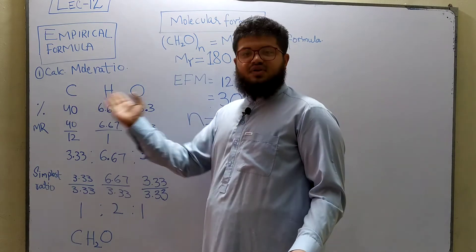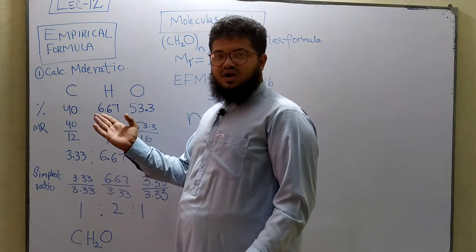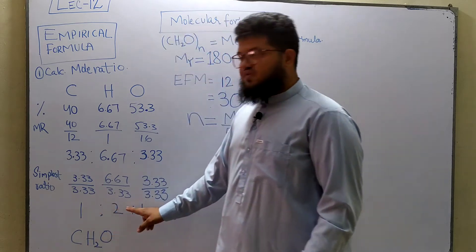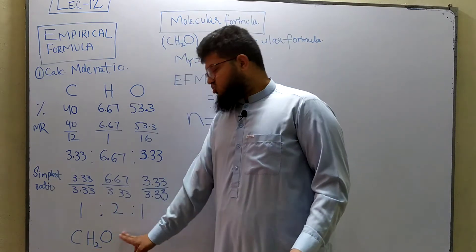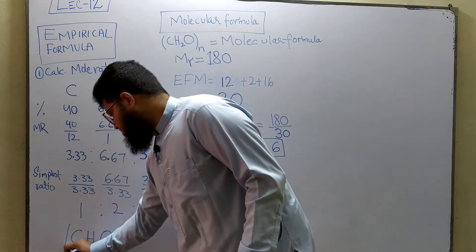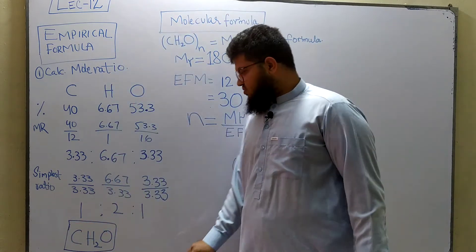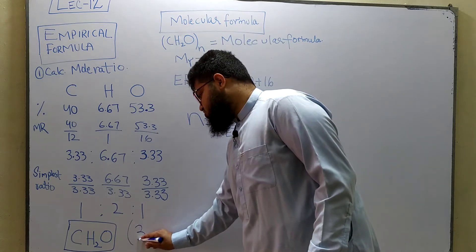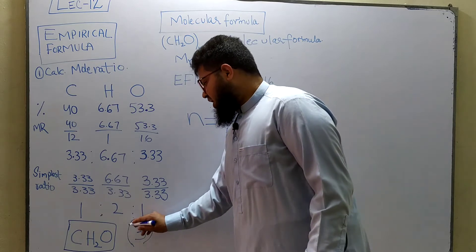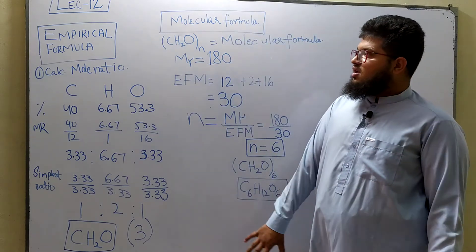This simplest ratio of 1 : 2 : 1 gives us our empirical formula. One carbon atom, two hydrogen atoms, and one oxygen atom — so the empirical formula is CH₂O. This entire empirical formula calculation is usually worth three marks and has been heavily asked in O level past papers as well.